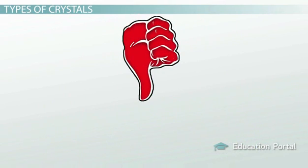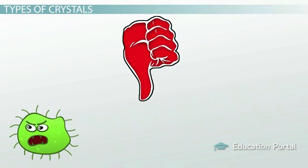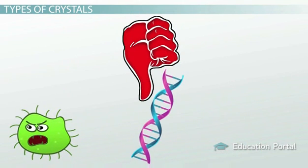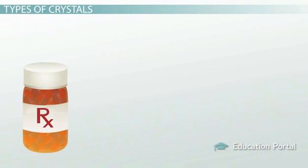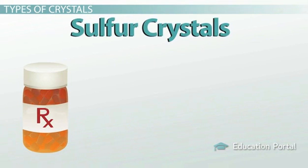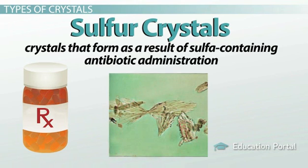Finally, certain crystals do not form as a result of an infection, genetic defect, or organ dysfunction as we have just gone over. Drug administration may also result in unique crystal formation. Sulfur crystals are crystals that form as a result of sulfa-containing antibiotic administration, resulting in shocks-of-wheat or needle-fan-shaped crystals. Take a look at the screen to see what they look like.